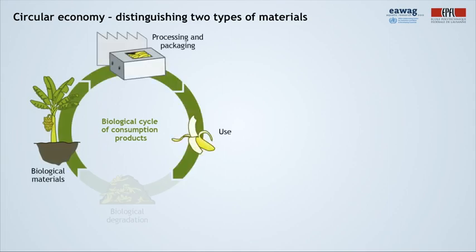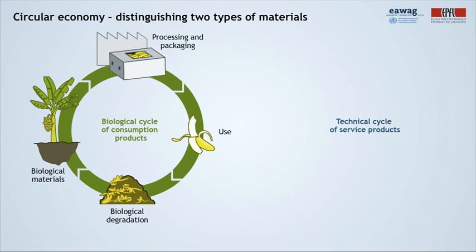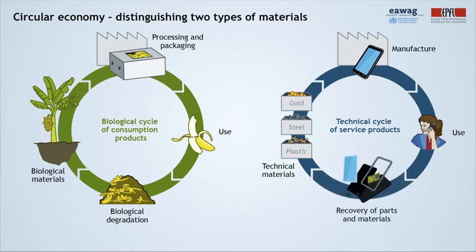Here we have an example of a biological material: food. Technical materials are used to make service products, such as a computer, telephone, washing machine, or a car. As they are non-renewable and often hazardous to human health and the environment, these are kept within the industrial technical cycle where they will be used to make new products time and again.